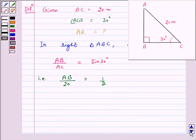Therefore, AB is equal to 20 times 1 by 2. Hence, the answer is 10 meters.